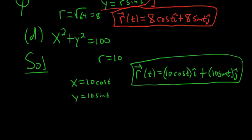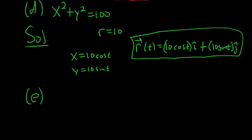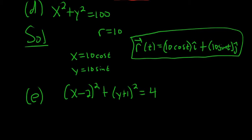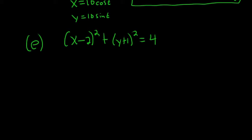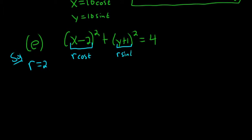Let's change up the center. Part e: (x minus 2) squared plus (y plus 1) squared equals 4. So we have a circle with a shifted center. The radius is 2, the square root of 4. The trick here is to set the first piece equal to r cosine t and the second piece equal to r sine t. So we set 2 cosine t equal to x minus 2, and 2 sine t equal to y plus 1.